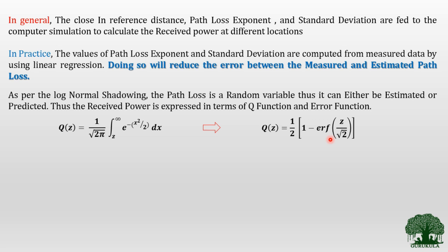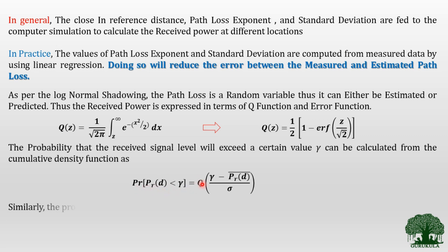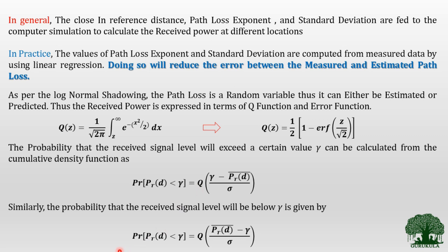To find the received power within a reference distance or beyond it, the probability that received power Pr exceeds a threshold gamma is expressed as Q((γ − P̄r(d)) / σ). When finding received power beyond a particular area, a corresponding expression using the Q function is used. This is how received power is expressed in terms of Q function, and Q function can be related to the error function through their known relationship.